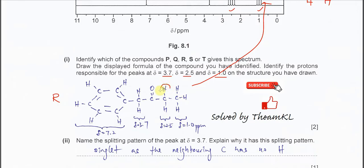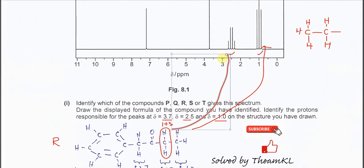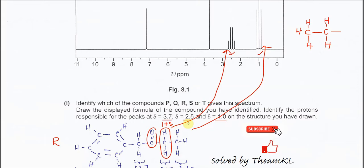For the CH2 protons, they couple with the three CH3 protons — plus three — so they form a quartet. This quartet appears around 2 to 3 ppm because this CH2 is next to the carbonyl group, so the chemical shift is around 2 to 3.